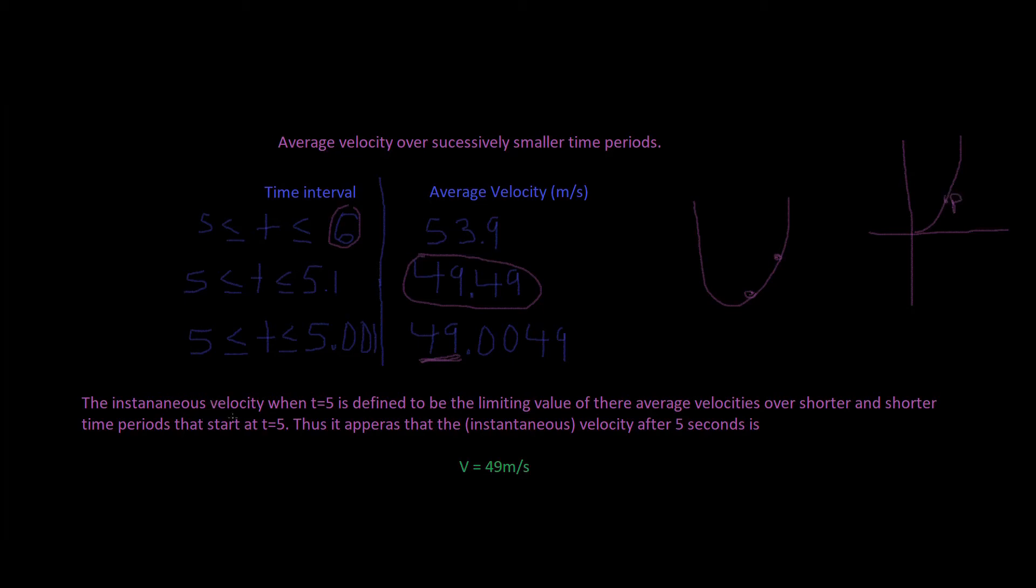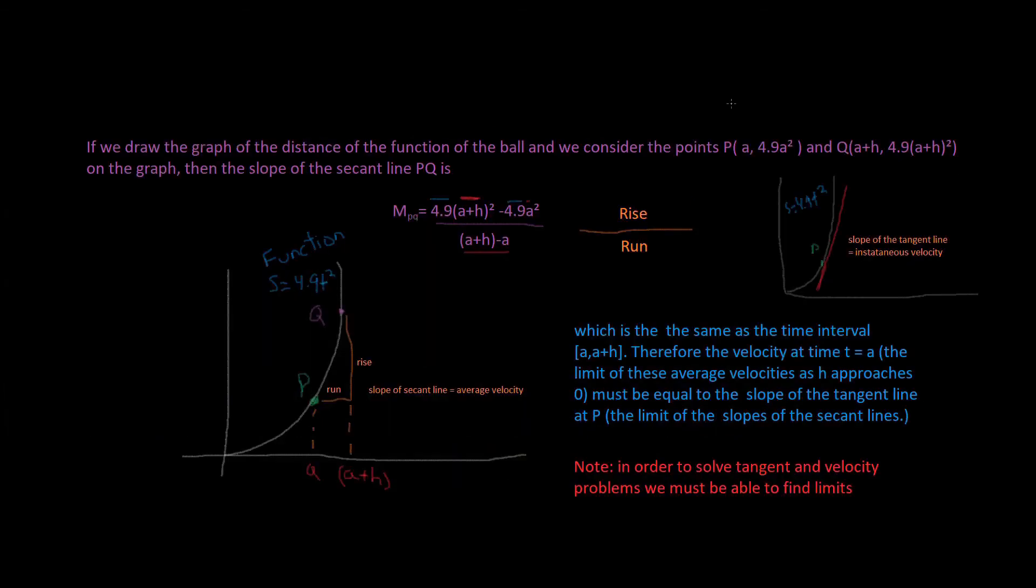So, the instantaneous velocity T equals 5 is defined to be the limiting value of their average velocities over shorter and shorter time periods that start at T equals 5. Thus, it appears that the instantaneous velocity after 5 seconds is V equals 49 meters per second. You may have the feeling that the calculations used in solving this problem are very similar to those used earlier in this video to find tangents.